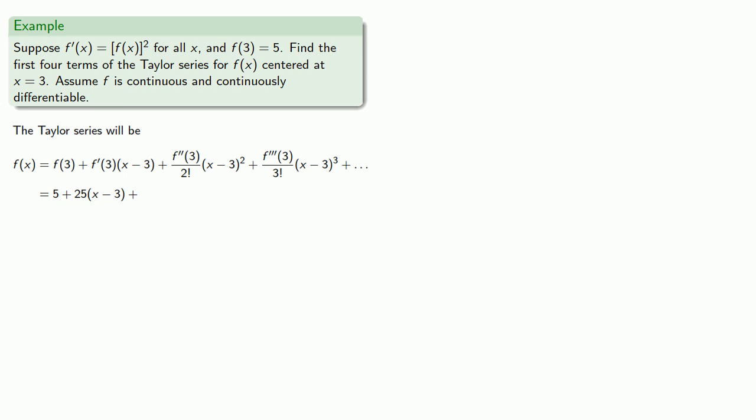Well, we do know something about the first derivative. Let's see if we can do that. Our first derivative is [f(x)]². And remember, the second derivative is just the derivative of the derivative, and so we can differentiate.